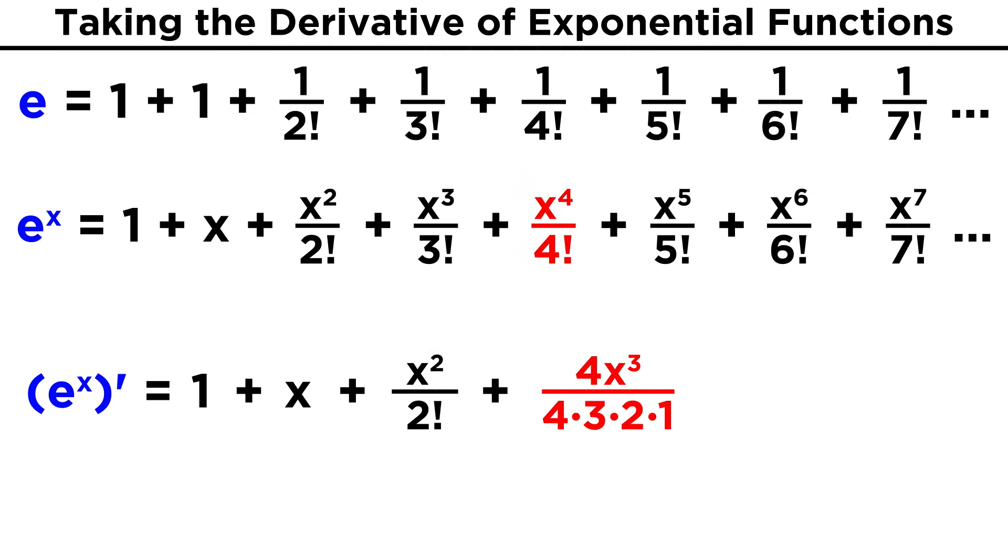For X to the fourth, again we get four X cubed, the fours cancel, and we are left with X cubed over three factorial.